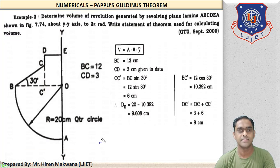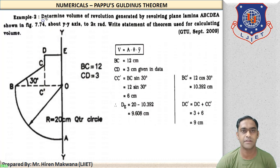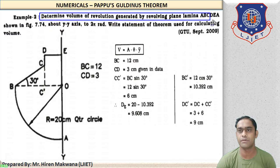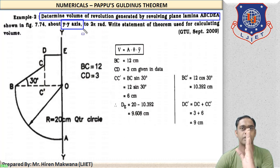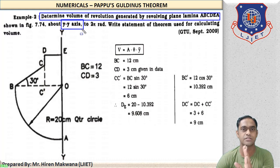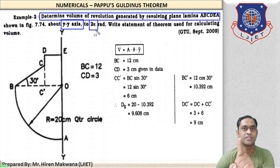This is the data of the sum: determine volume of revolution in plane area A, B, C, D, E, A as shown in figure, above the Y-Y axis. So we have to rotate the element vertically about the Y-Y axis to 2π radians. The angle of revolution is θ = 2π.